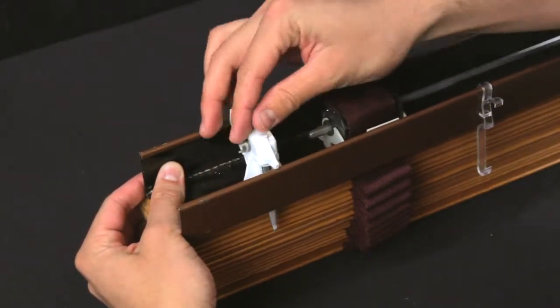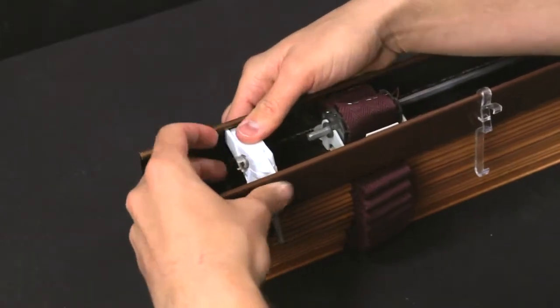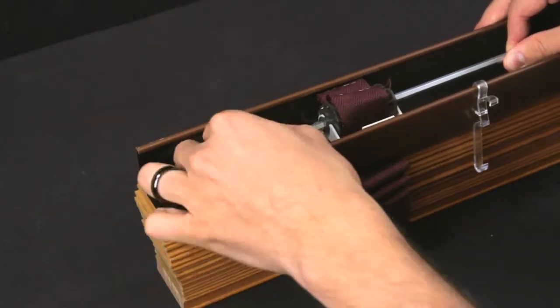Install the new wand tilter. Slide the tilt rod through and replace the end stiffeners.